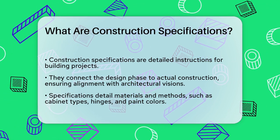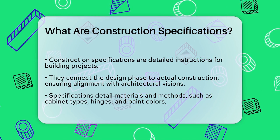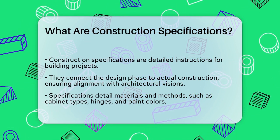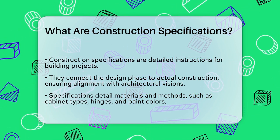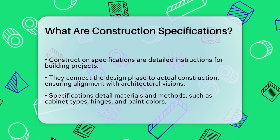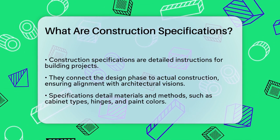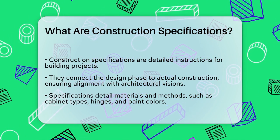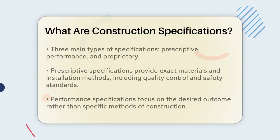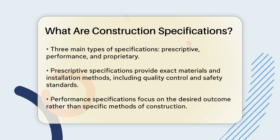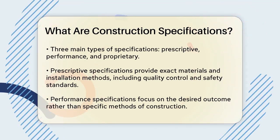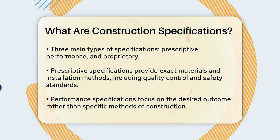Imagine you're building a bathroom. The drawings will show you where everything goes, but the specifications will tell you exactly what materials to use, such as the type of cabinet, hinges, and paint color. These specs are so detailed that they even specify the product numbers for the materials.